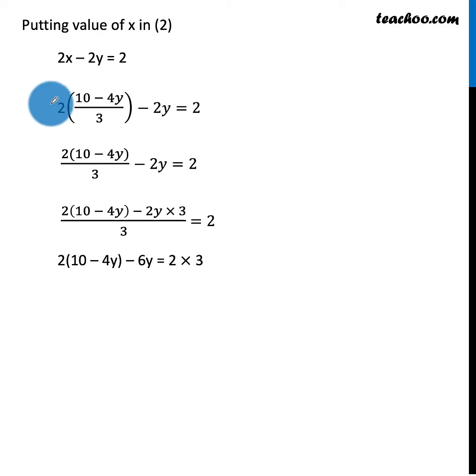So, here, we will multiply both sides by 3. So, here, 3 times 3 will cancel. This will be 2 times 10 minus 4y, minus 6y equals 6.